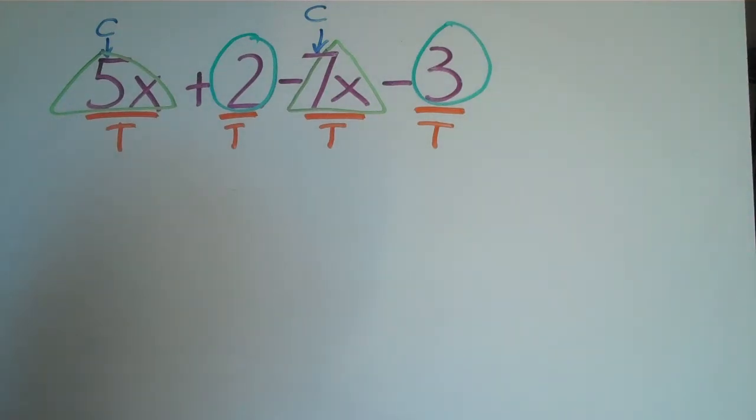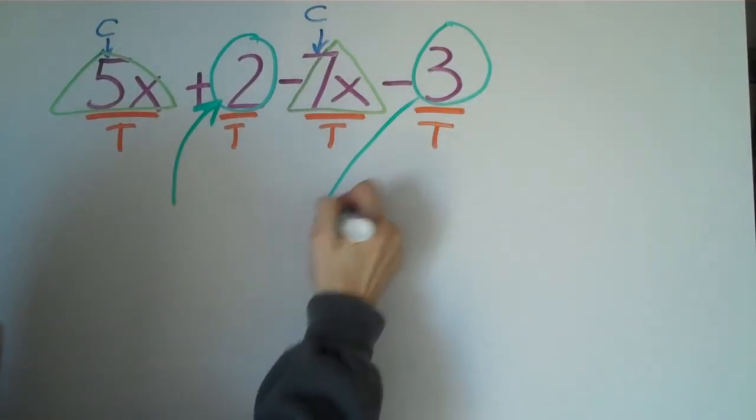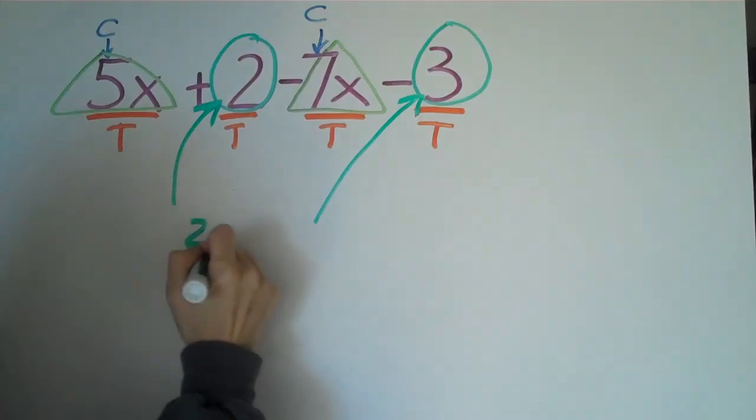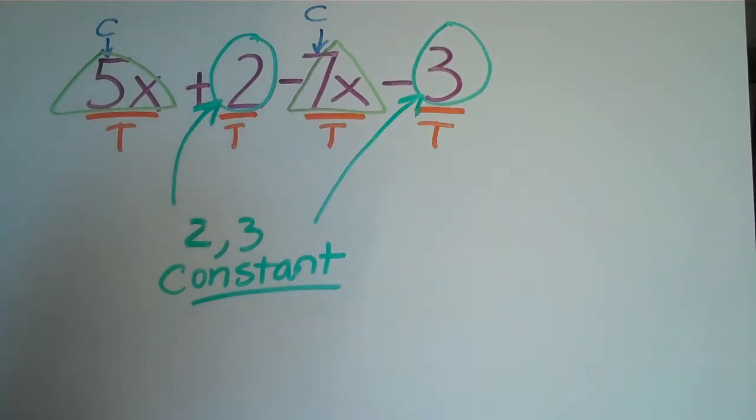Okay, and that leaves us with the constants. Well, 2 and 3 also happen to be the numbers that are constants. So this number and this number, a 2 and a 3. These are constants because they never change. They are constant. Variables vary. They change. Constants remain the same.